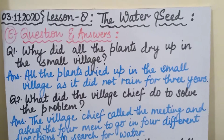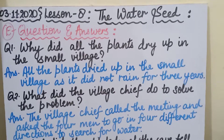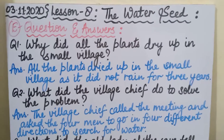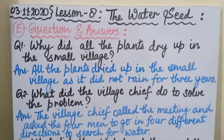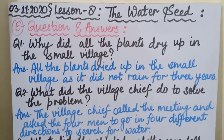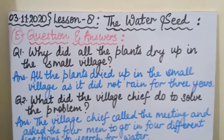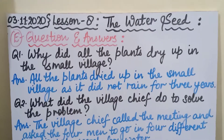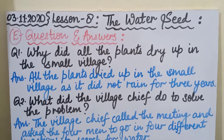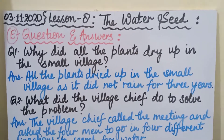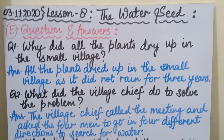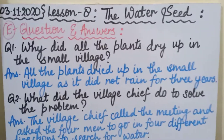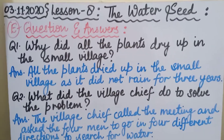Starting with question answers, children — we have done 4 exercises. First exercise was word meanings, then second was fill in the blanks, then C part was 'who said the following,' and D part, which we did yesterday, was true and false. Now today we are going to do question answers.